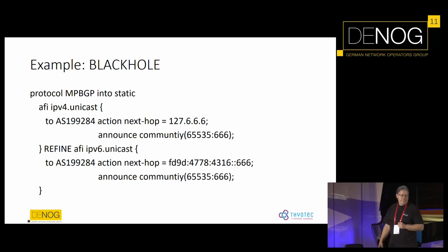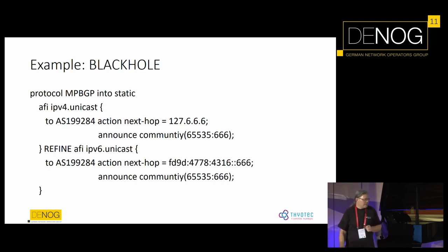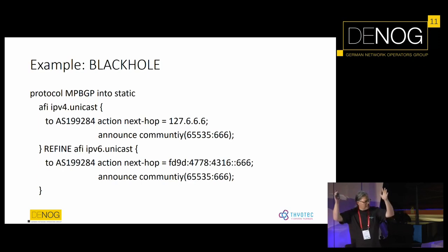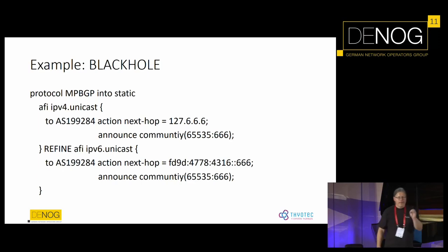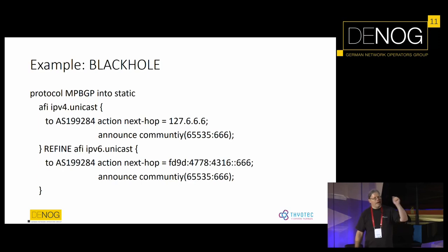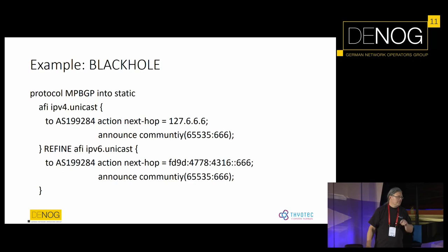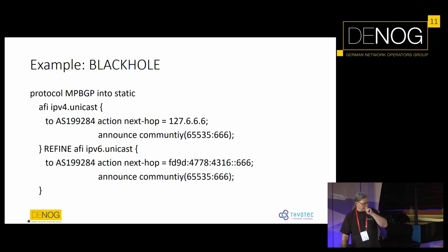Coming to the examples. One common example is I am providing black hole service. That's the way I describe it in the AutNum object: for IPv4 unicast, if I take routes from BGP into the routing table — the static one — then I change the next hop to a null device, discarding traffic. I do this only if I see the community for black hole. Same for IPv6. For the question section afterward, I want to see some hands on how that IPv6 address was generated and what type of address it is. This way, I'm able to describe to others that I'm providing black hole service in the standard way.